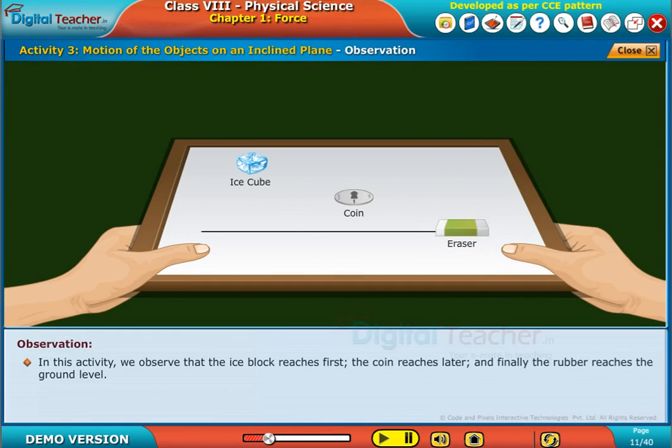In this activity, we observe that the ice block reaches first, the coin reaches later, and finally the eraser reaches the ground level.